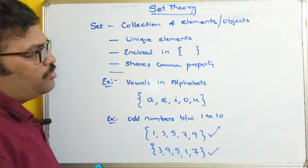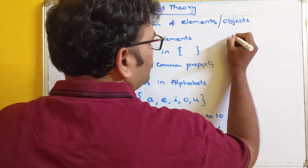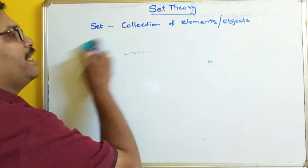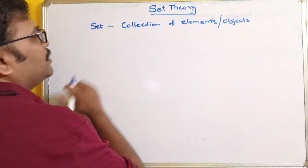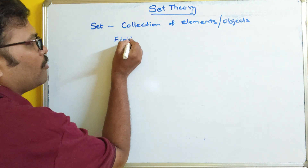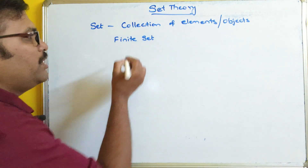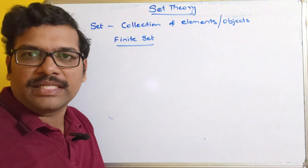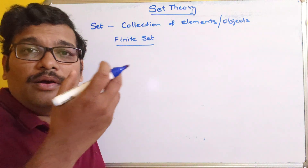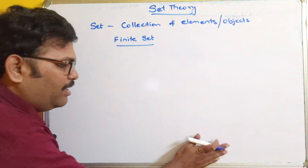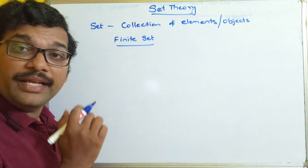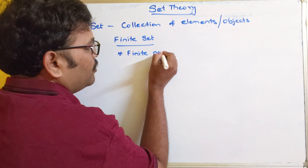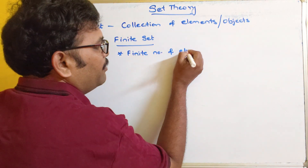Mainly there are two types of sets: finite and infinite. A finite set — the name itself indicates it — is a set having a finite number of elements. That means if we are able to count or find out the number of elements in a set, then it is called a finite set.